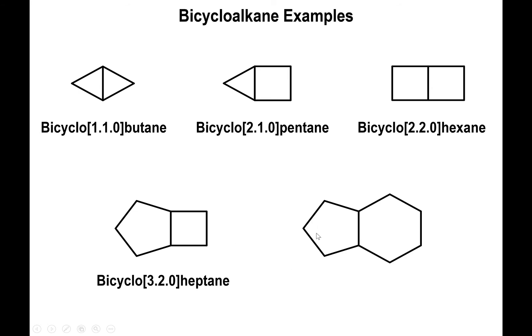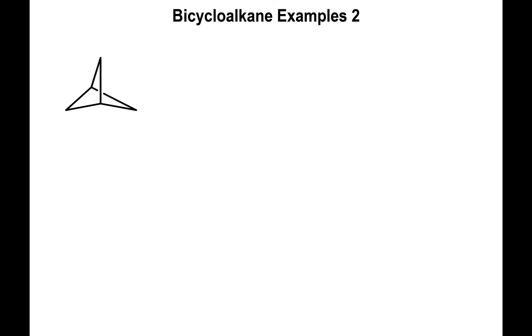For one more example in this group: we have three carbons to the left, four carbons to the right, and zero above the bridge heads, so this is bicyclo[4.3.0]. Adding those numbers gives seven, plus two more is nine: this is bicyclononane.